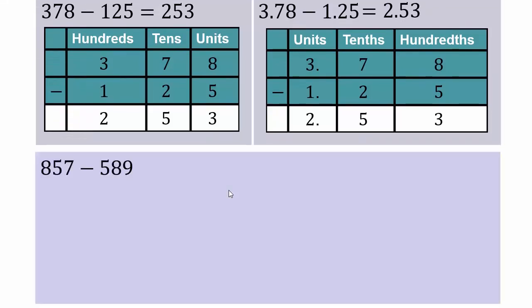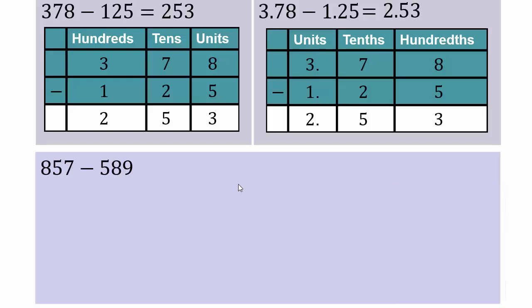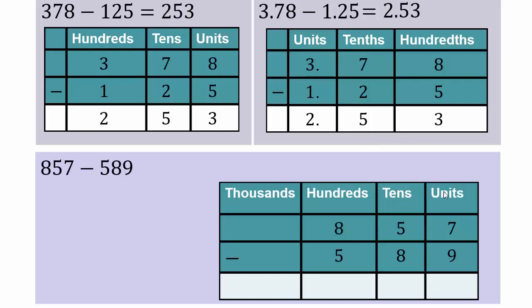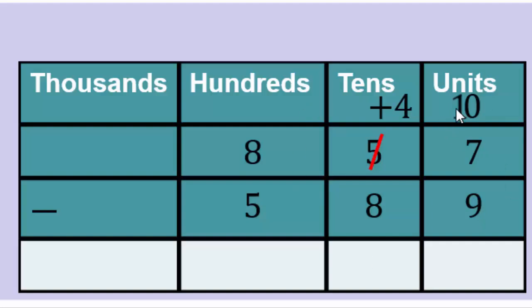Now let's look at 857 minus 589. Here we have 7 units minus 9 units, but we cannot take 9 units from 7 units. We have 5 groups of tens, so we break that 5 as 1 plus 4, take that 1 group of tens and move it to the units — unbundling it into 10 singletons. Now we have 17 singletons, subtract 9, leaving 8 singletons.